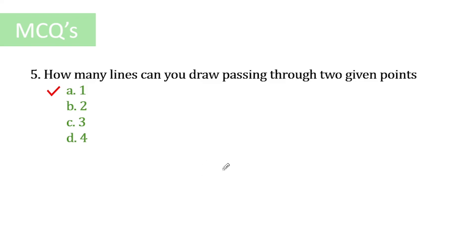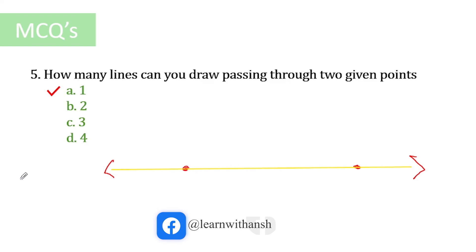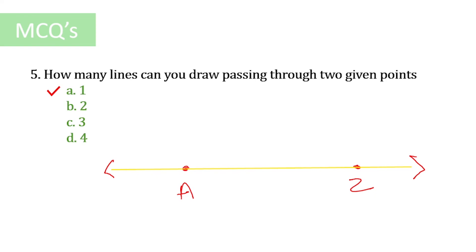The last question: how many lines can you draw passing through two given points? Let's draw two points, A and Z. We can draw one line passing through both points. Can we draw any more lines through both points at the same time? No, we cannot. So the answer is only one line can pass through two given points.